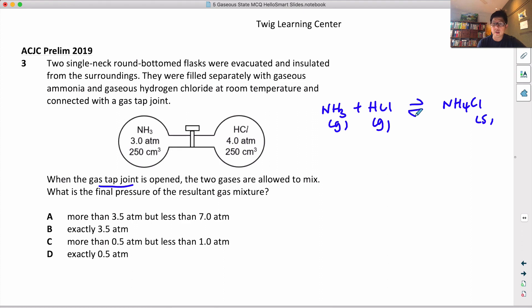Typically if there's no change in volume - pV equals nRT - so I'm going to take it as if volume doesn't change, pressure and moles are proportional.